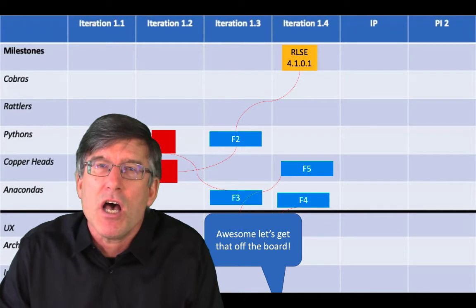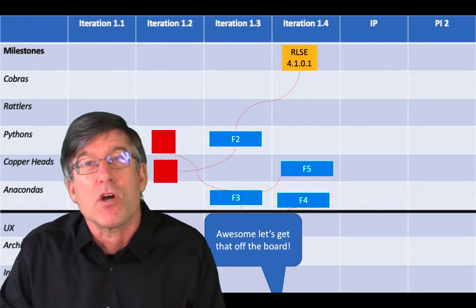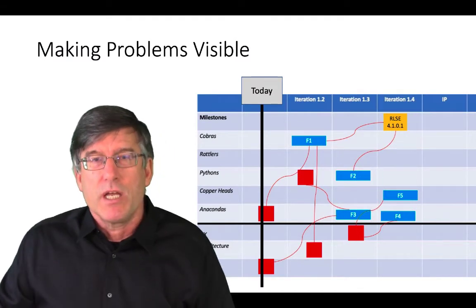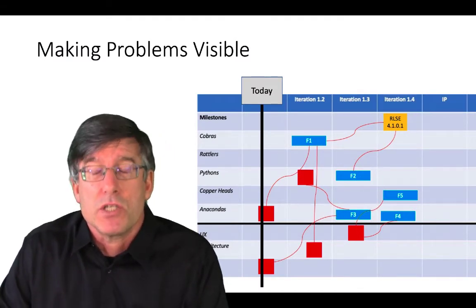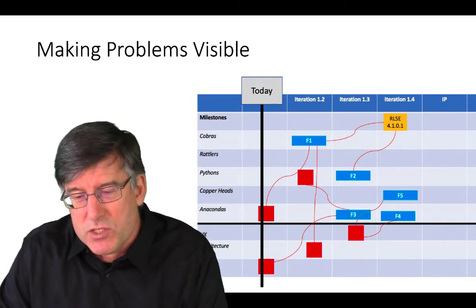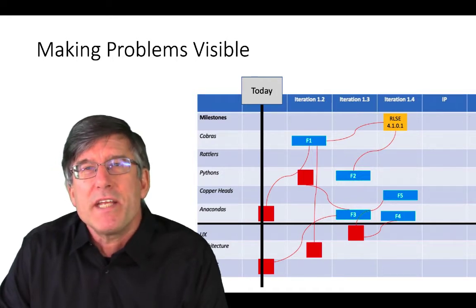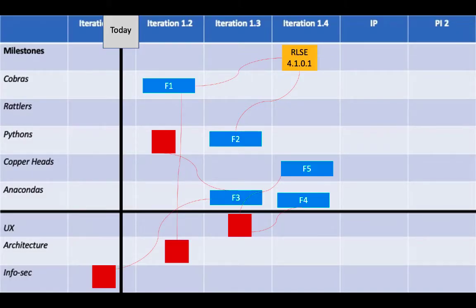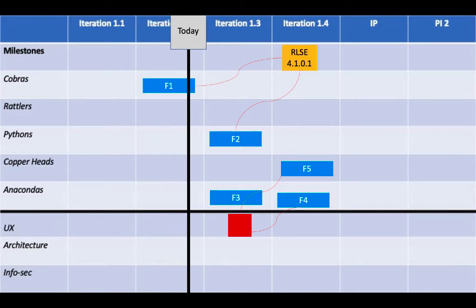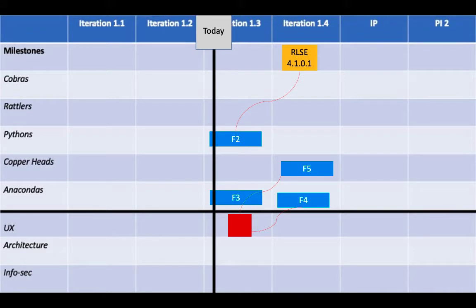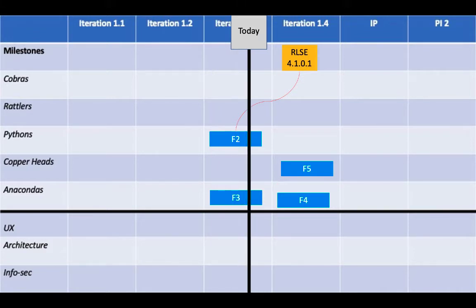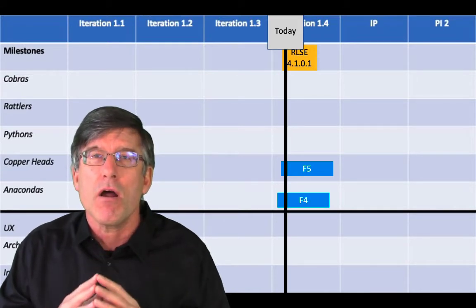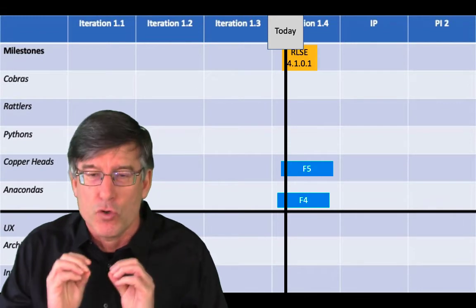Something I often do with clients is to make this explicit. If they're using a physical board, we may do something as simple as take a piece of cardboard with a weighted piece of string and mark 'this is today.' As time progresses, the today line moves across the board, and what should be happening is that what's behind that today line should be disappearing from the board. This gives us a really good, fast visual indicator of whether we're making progress as planned during PI planning.